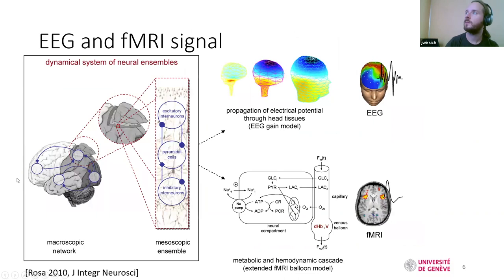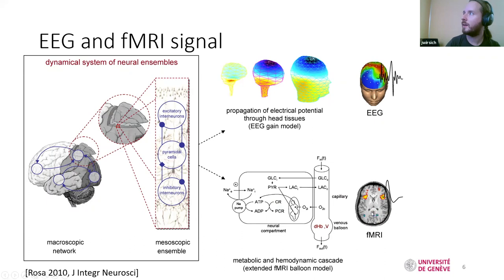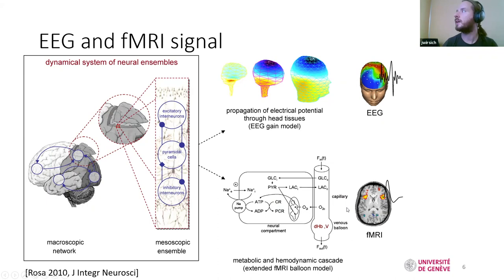The basic idea is that I split up my brain into different regions, and then I can get simultaneous signals from both EEG and fMRI. The EEG signal captures the electrical activity on the scalp, while functional MRI is a bit more complicated. The basic idea is that once we have oxygen uptake from brain activity, we get the so-called BOLD signal, which we can see in the MRI scanner.